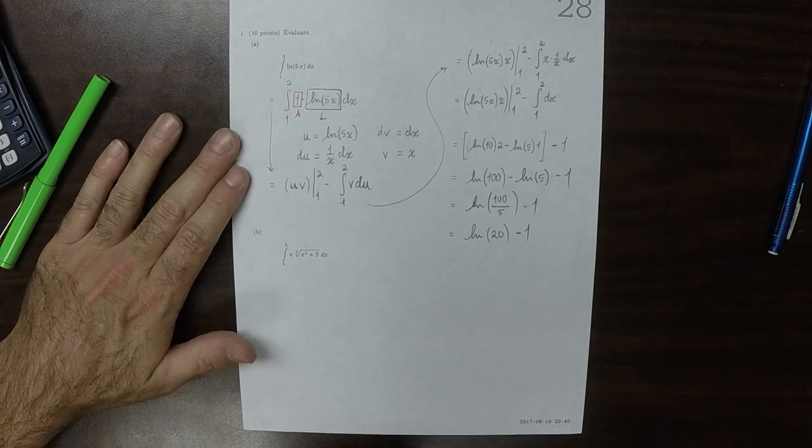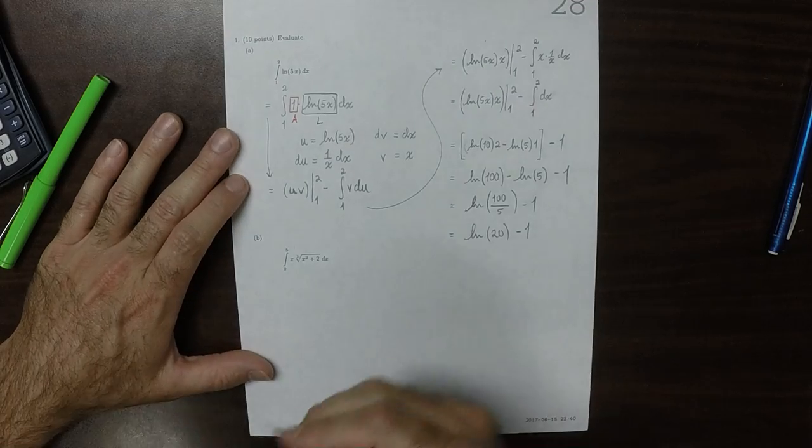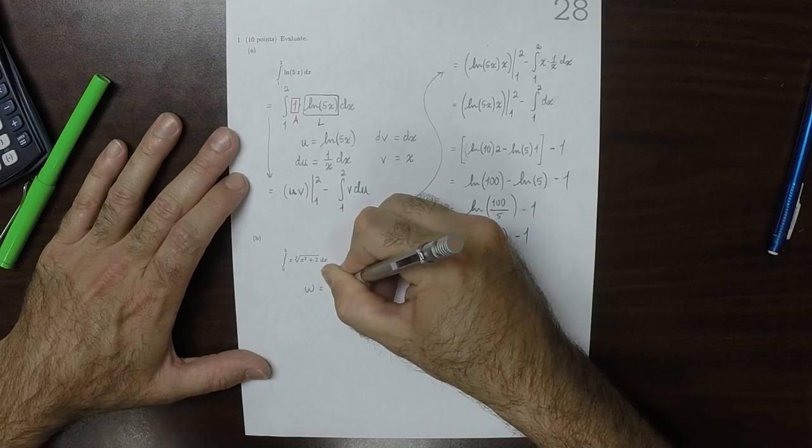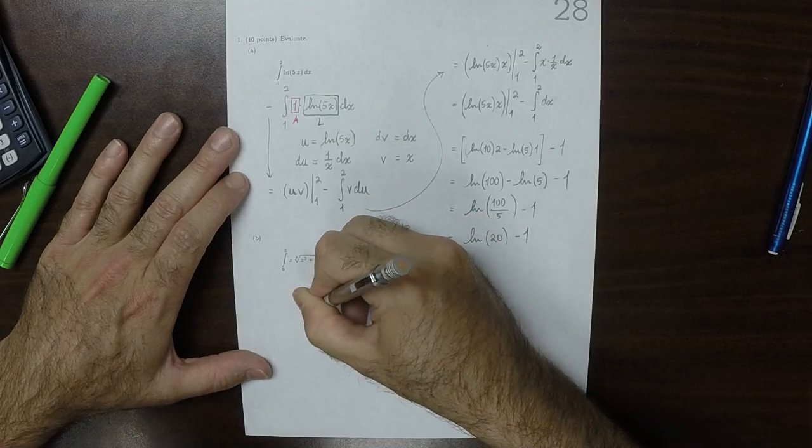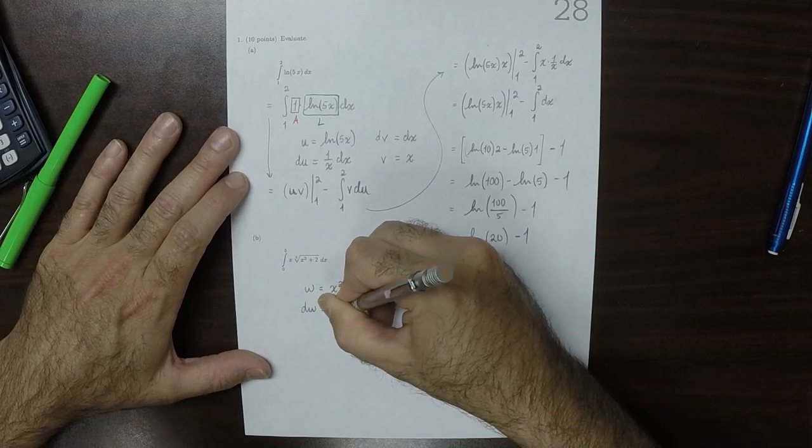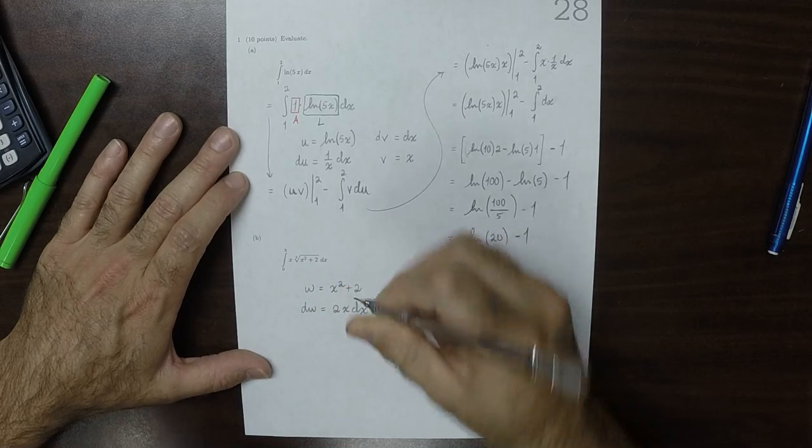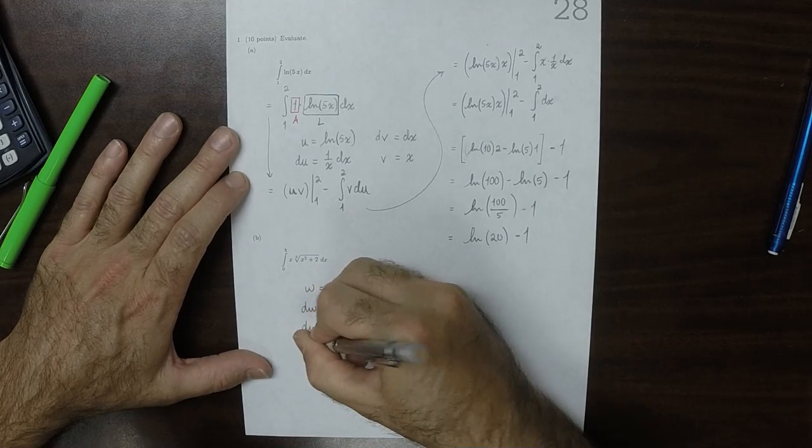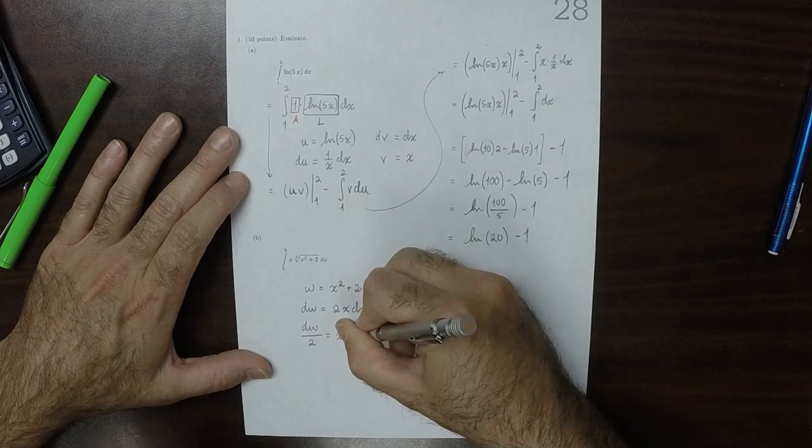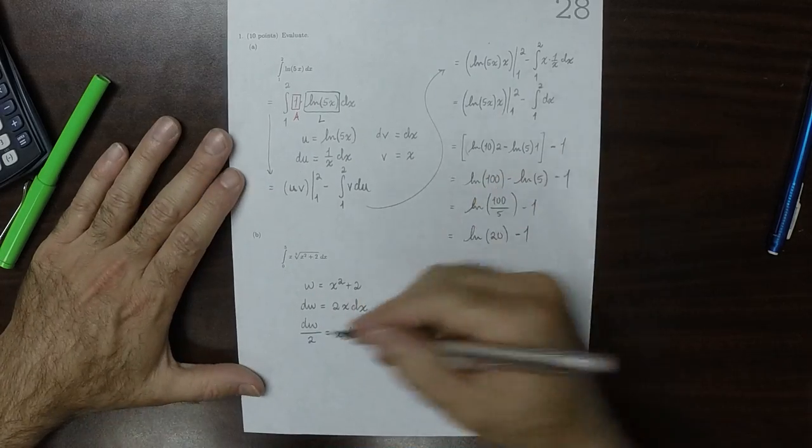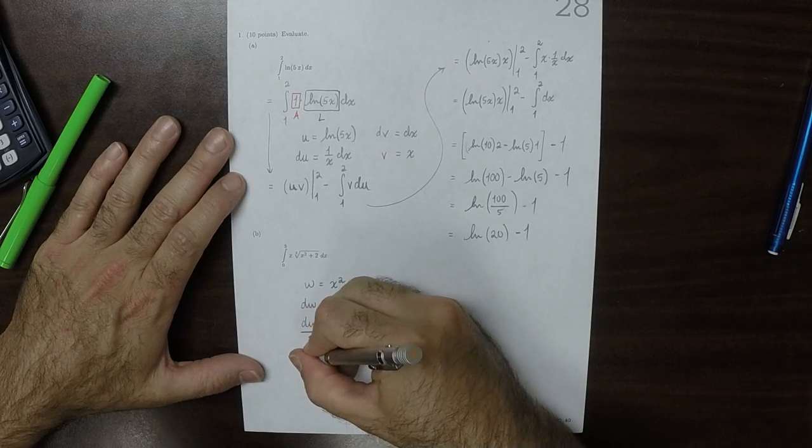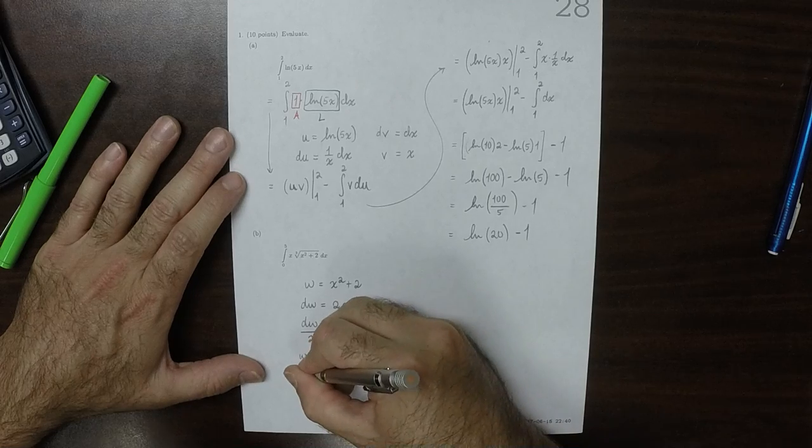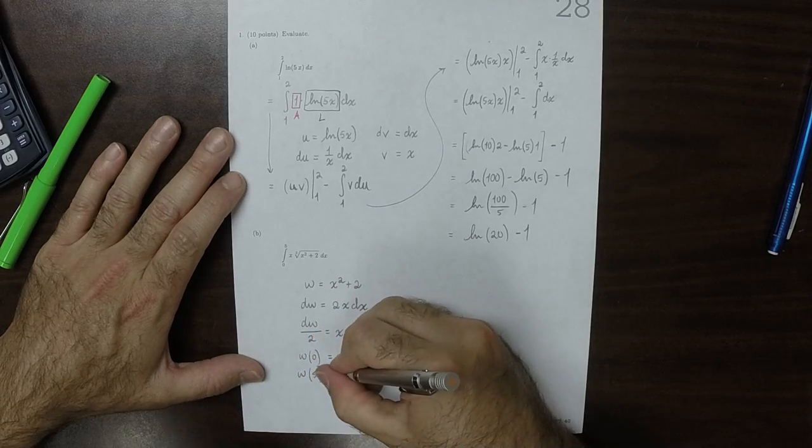For this one, well, we can do a substitution. I'll do w equals x squared plus 2. So dw is 2x dx, but I don't need that 2 on the right-hand side, so I'll move it to the left. And since this is a definite integral, I'll change the limits now. So w when x is 0 is 2, and w when x is 5 is 27.